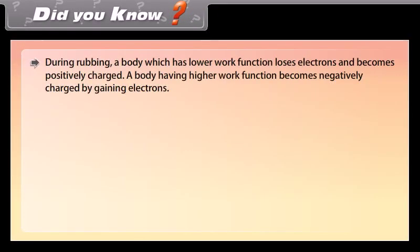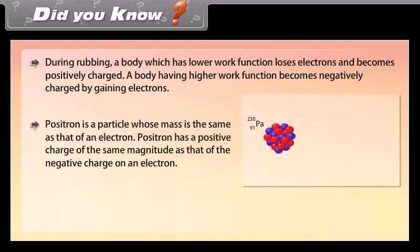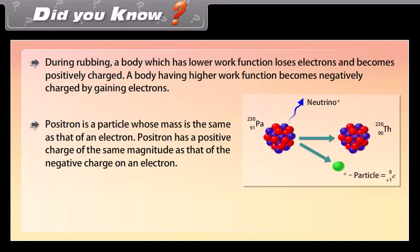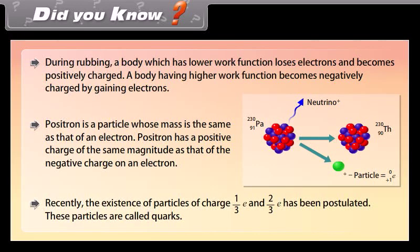Did you know? During rubbing, a body which has a lower work function loses electrons and becomes positively charged, while a body having a higher work function becomes negatively charged by gaining electrons. Positron is a particle whose mass is the same as that of an electron, but has a positive charge of the same magnitude as the negative charge on an electron. Recently, the existence of particles of charge 1/3 e and 2/3 e has been postulated. These particles are called quarks.